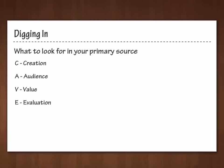Now that we have a basic understanding of primary sources, we are going to discuss how to evaluate them. We will be using a method acronymed CAVE, which stands for Creation, Audience, Value, and Evaluation. It is important to note that not every facet within each of those subclasses will be applied to every item of primary sources we come across. But they do provide a very good basis to evaluate sources no matter what type, whether it be a photograph, artifact, or written document.